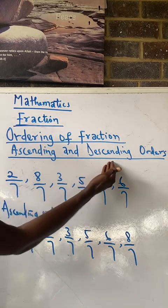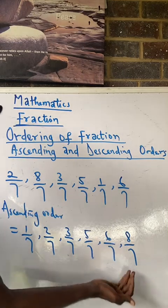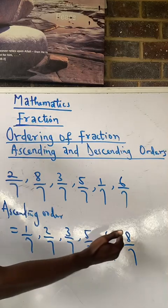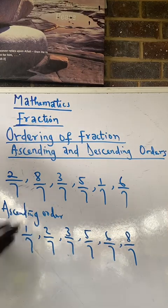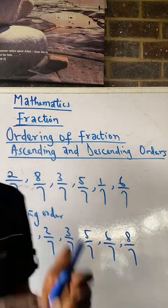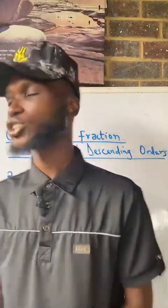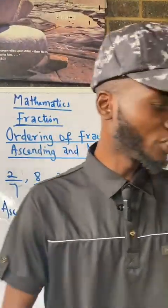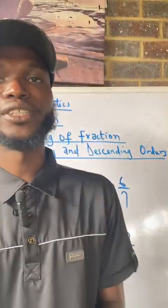And, if you are asked to arrange in descending order, that means we start just reverse it from 8 over 7 down to 1 over 7. This is how we deal with fractions with the same denominator. Thank you for viewing this. God bless you.